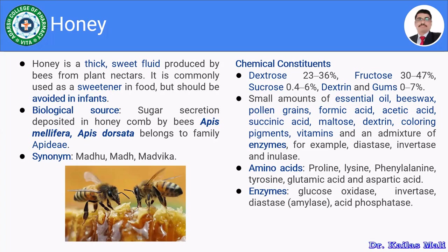The biological source of honey: it is a sugar secretion deposited in a honeycomb by the bees Apis mellifera and Apis dorsata, belonging to family Apidae. The honey is collected by honeybees and stored in the honeycomb by Apis mellifera and Apis dorsata.